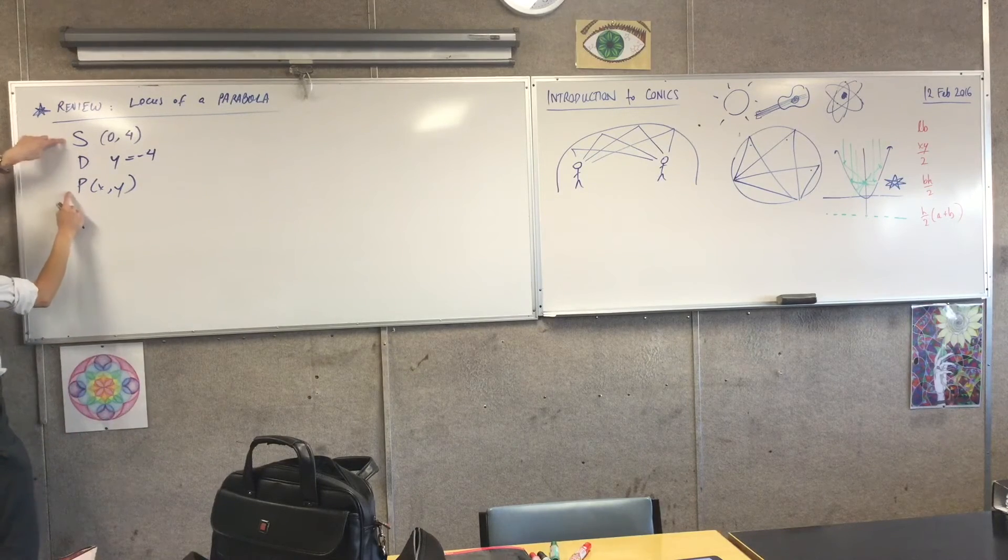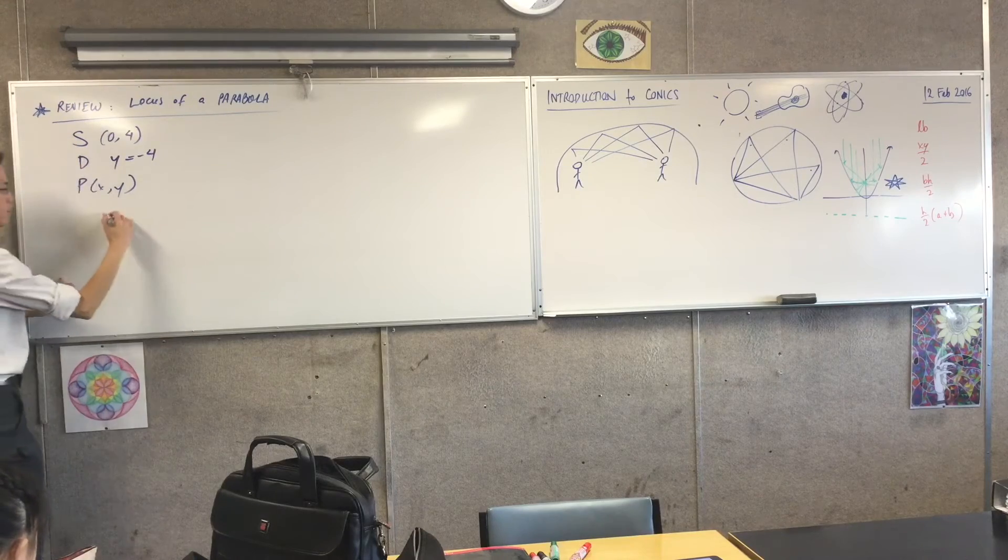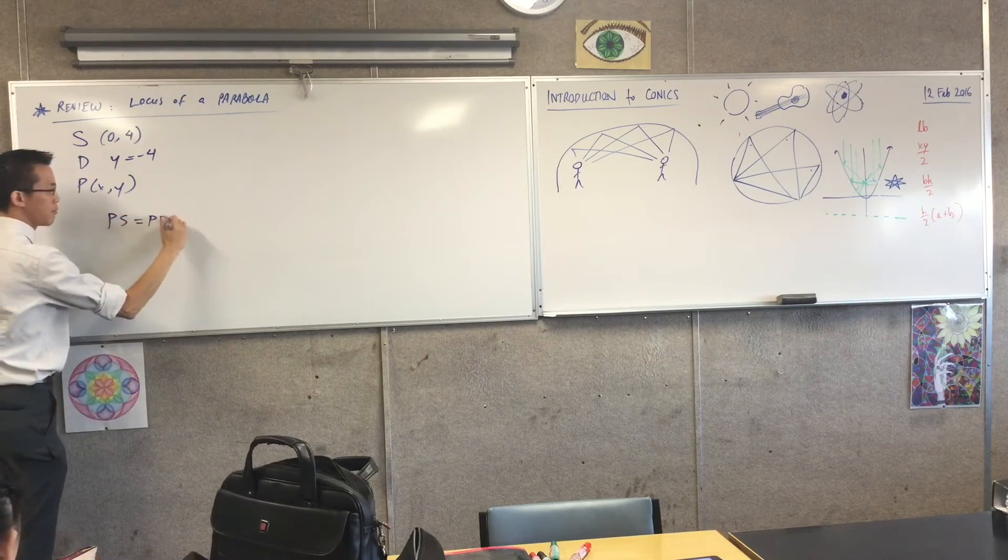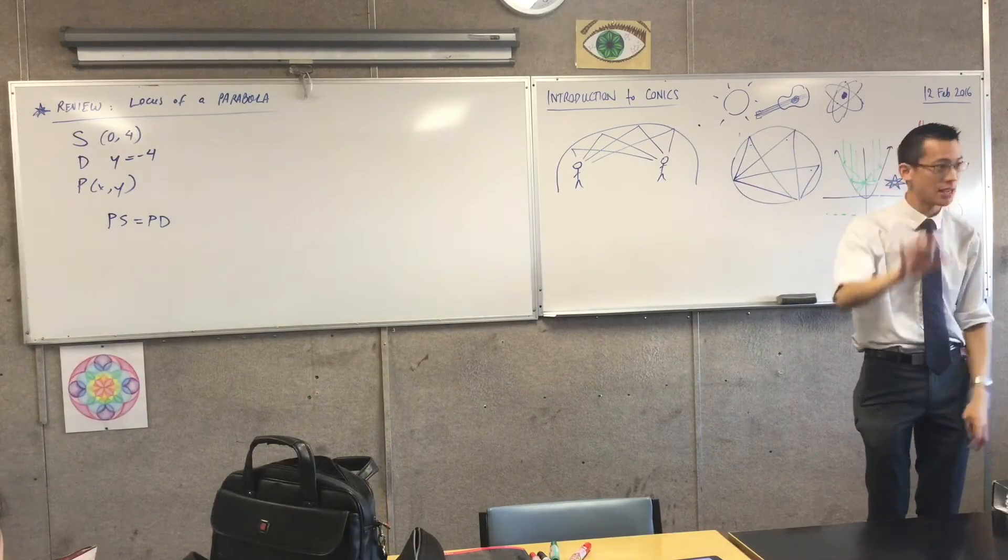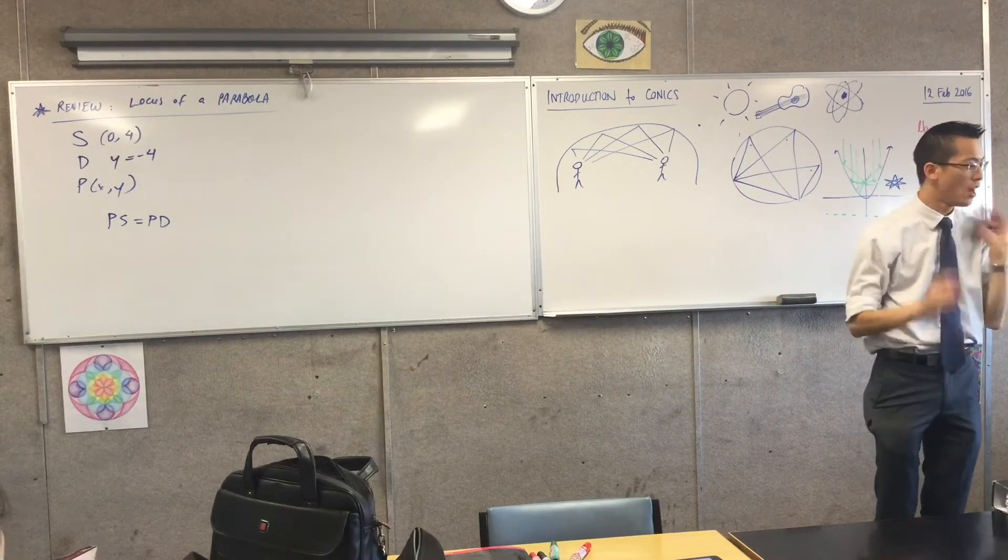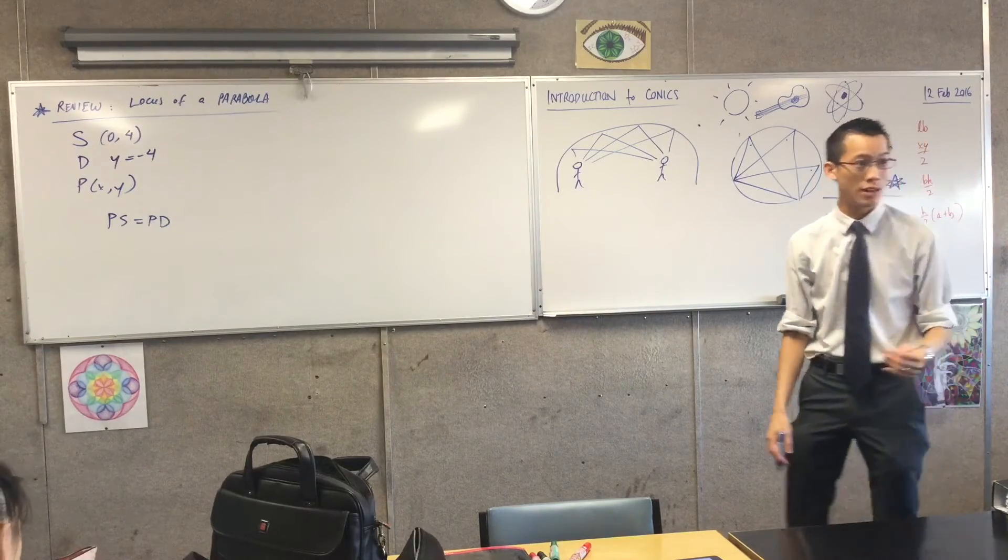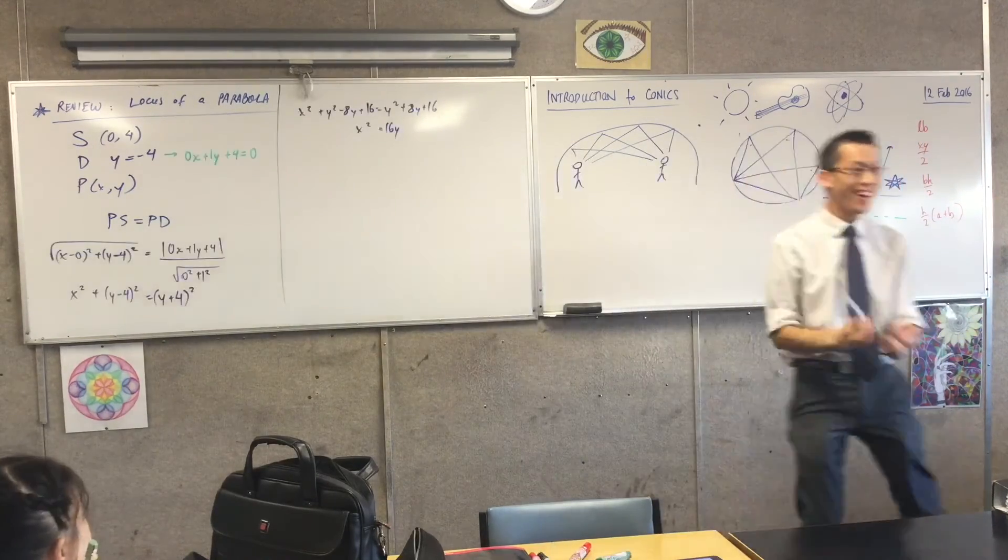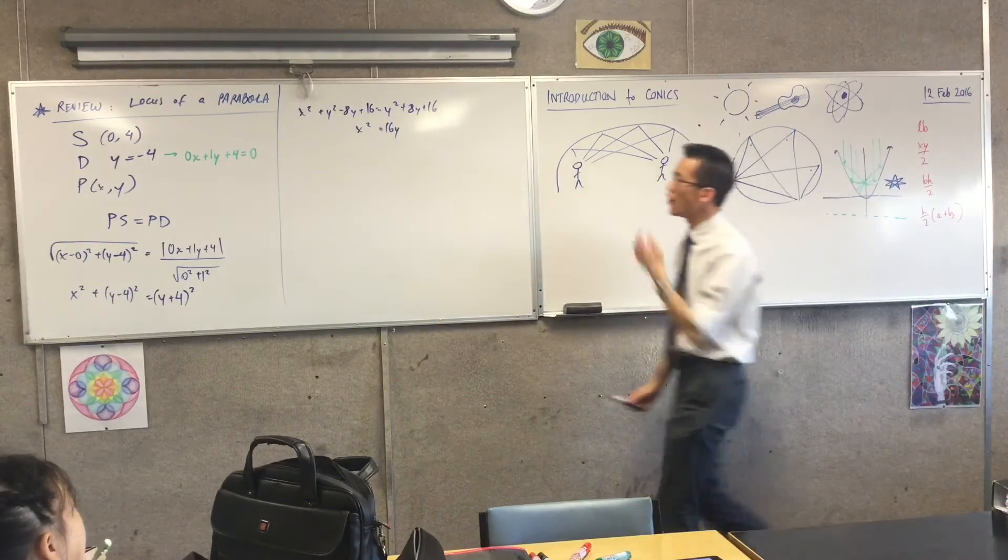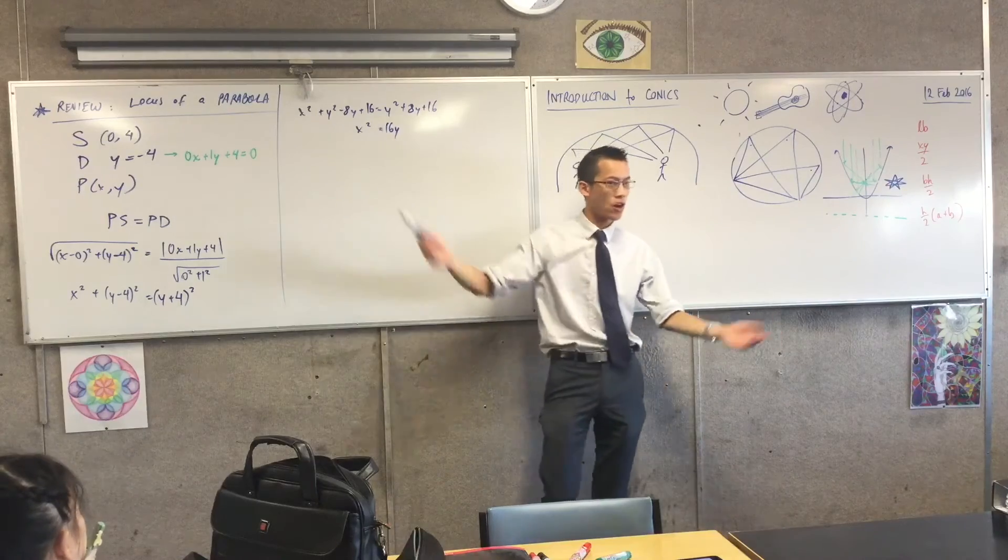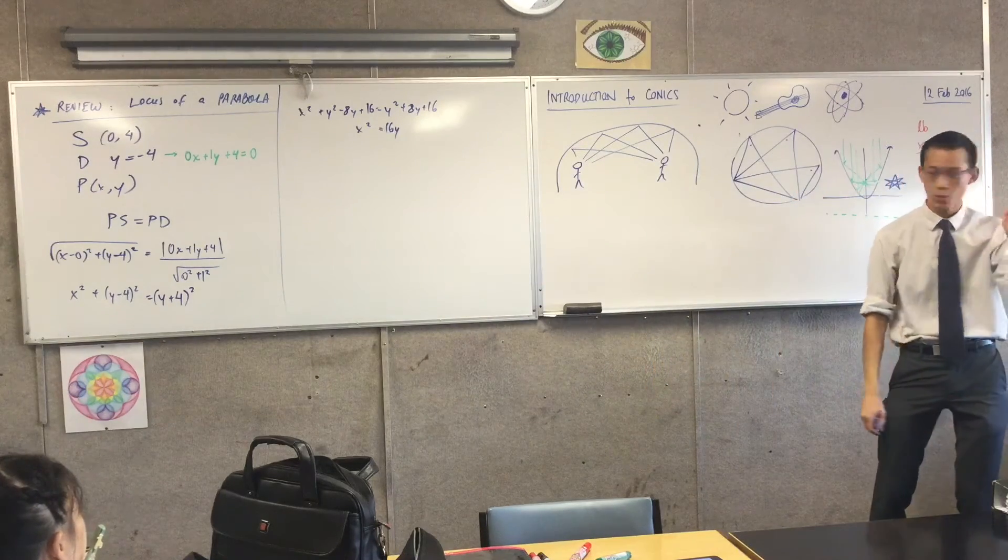Then we have to do some algebra. We need two-point distance and then we need the perpendicular distance formula. I'll give you a minute. Can you just do that? Get down to the end of your equation. We have an equation, we have verified what we're expecting, namely that this is going to pass through the origin and so on.